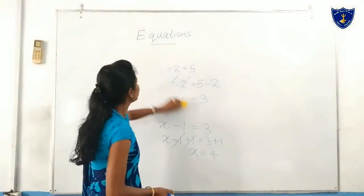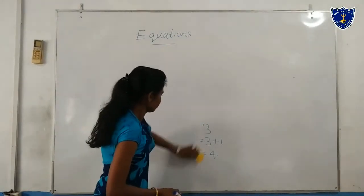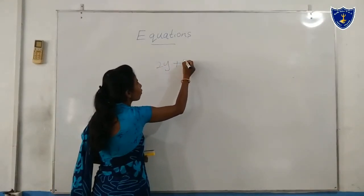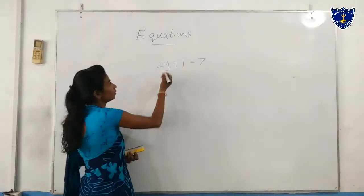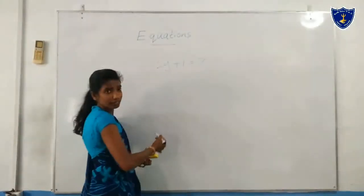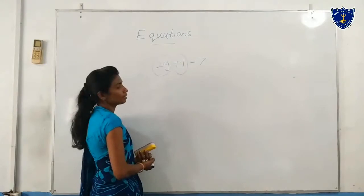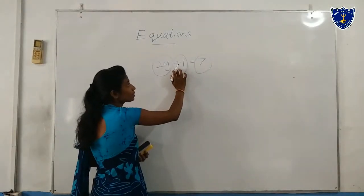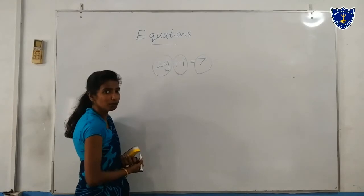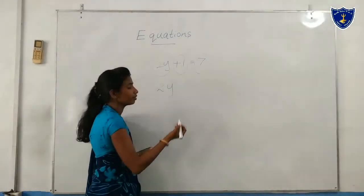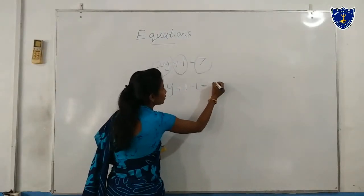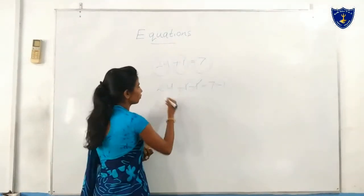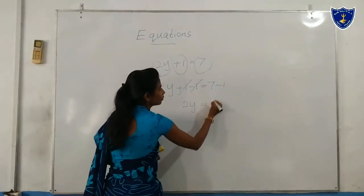Shall we move to another example? Look at here: 2y plus 1 equals 7. Here we can see 3 terms: 2y is one term, plus 1 is another term, and 7 is another term. First, we want to remove this plus 1. How? We take minus 1: plus 1 minus 1, and 7 minus 1. Here 1 cancels out, then 2y equals 6.